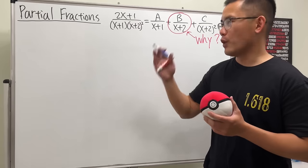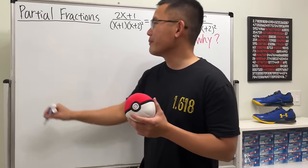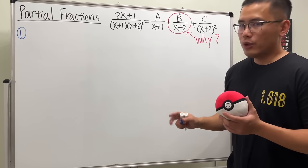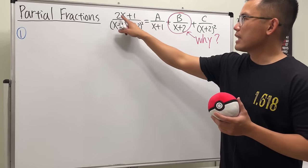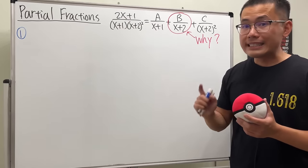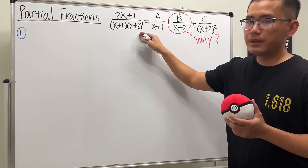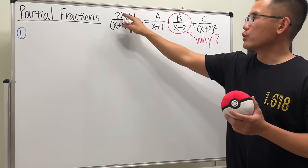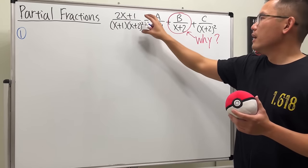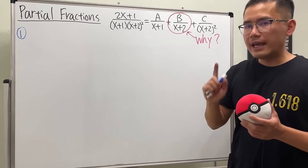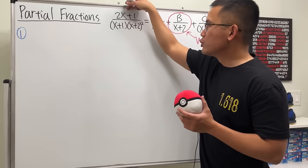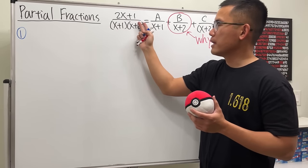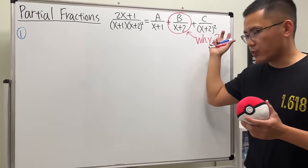Before I answer this question, let me go over the setup. When doing partial fractions, the top doesn't matter as long as the degree on the top is less than the degree on the bottom. So this could have been 3x minus 11 or 2x minus 217 — the setup will still be the same, as long as the degree is strictly less than the degree on the bottom. The degree here is 1, and the degree here is 1 plus 2, which is 3, so the setup will be like this.